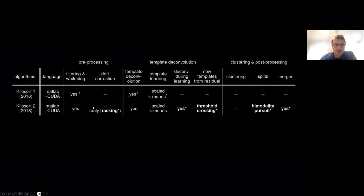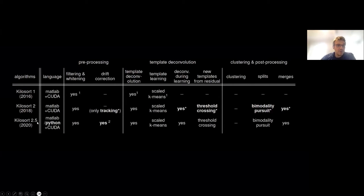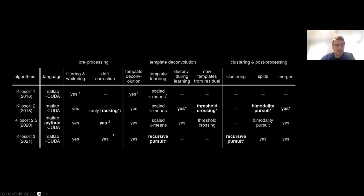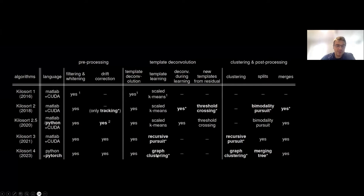Kilosort 2 was the first framework that had tracking — it allowed us to deal with drift. Drift will be an important topic today. Kilosort 2.5 introduced another way to deal with drift. Kilosort 3 introduced new clustering algorithms, including something called recursive pursuit. We're not going to talk about that today because it was made obsolete by a new clustering algorithm introduced in Kilosort 4 called graph clustering.